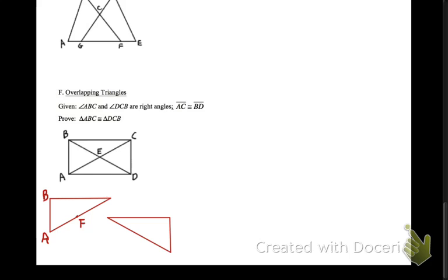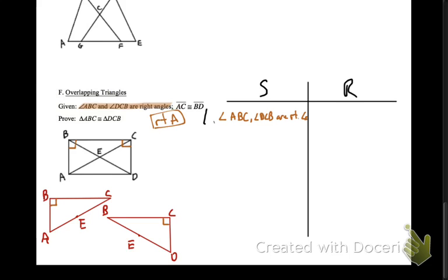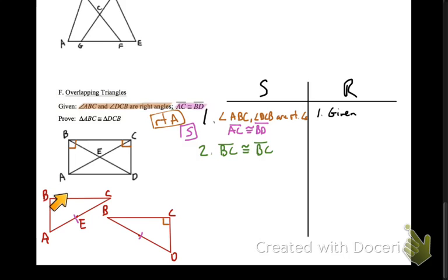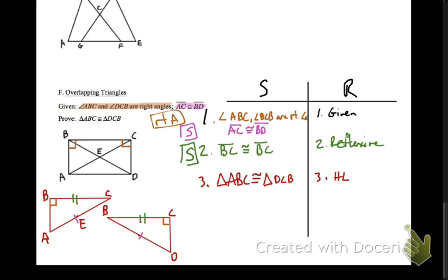We've got overlapping triangles again to show that triangles ABC and DCB are congruent. The given tells us we've got right angles — sweet. It also gives us a congruent side, which is worth noting is the hypotenuse of our triangle. BC is a common shared side, so BC is congruent with itself. We have a right angle, a hypotenuse, and a leg. Guess what — we've got congruent triangles by HL, hypotenuse-leg. You're going to see these patterns over and over again, and I hope this helps you see how it all works.